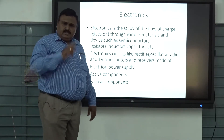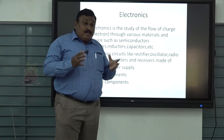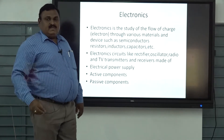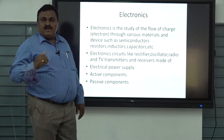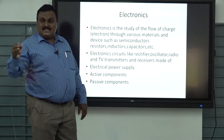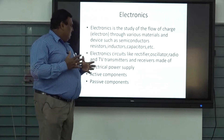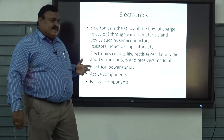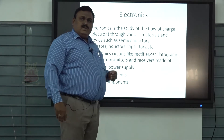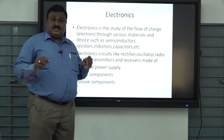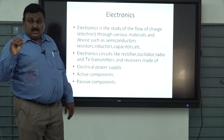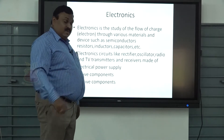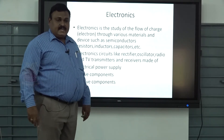Nowadays we are using so many electronic circuits. What are the familiar circuits we have seen in our day-to-day life or in our classes? We are familiar with circuits like the rectifier, oscilloscope, and radio and TV transmitters and receivers. The rectifier is a very important term. In previous class we studied about rectifiers - the diode is an example. Rectification is the conversion of AC into DC.